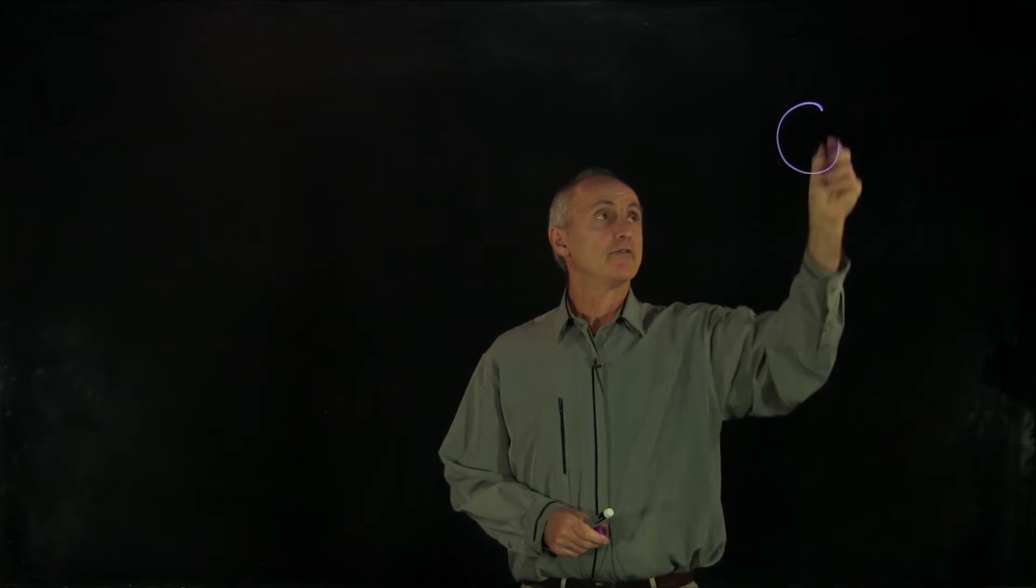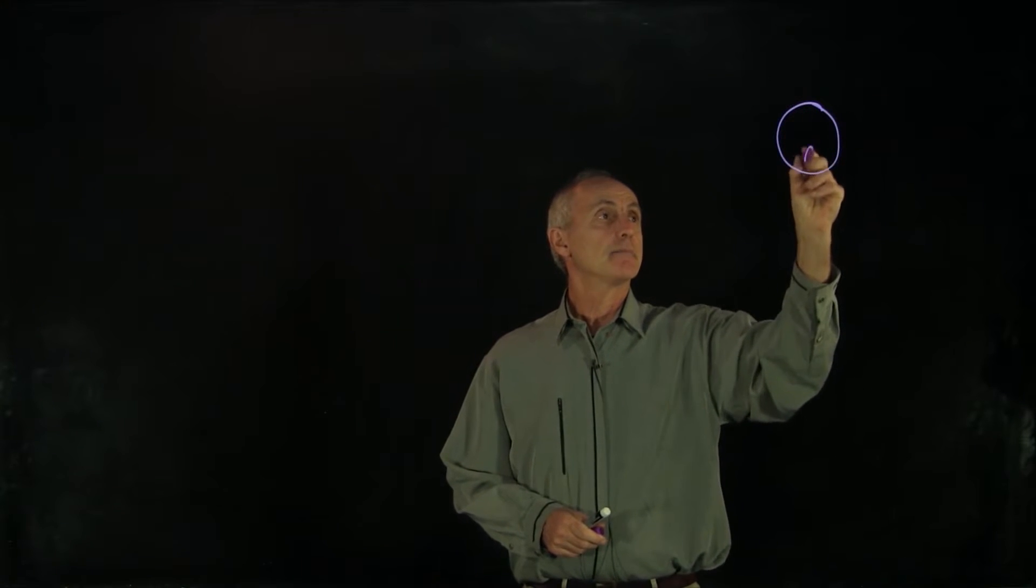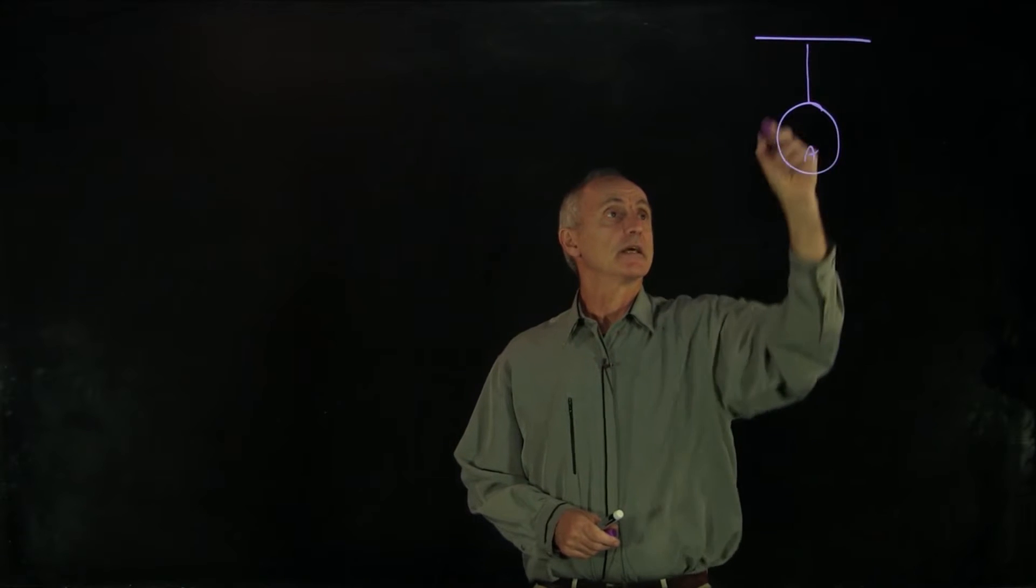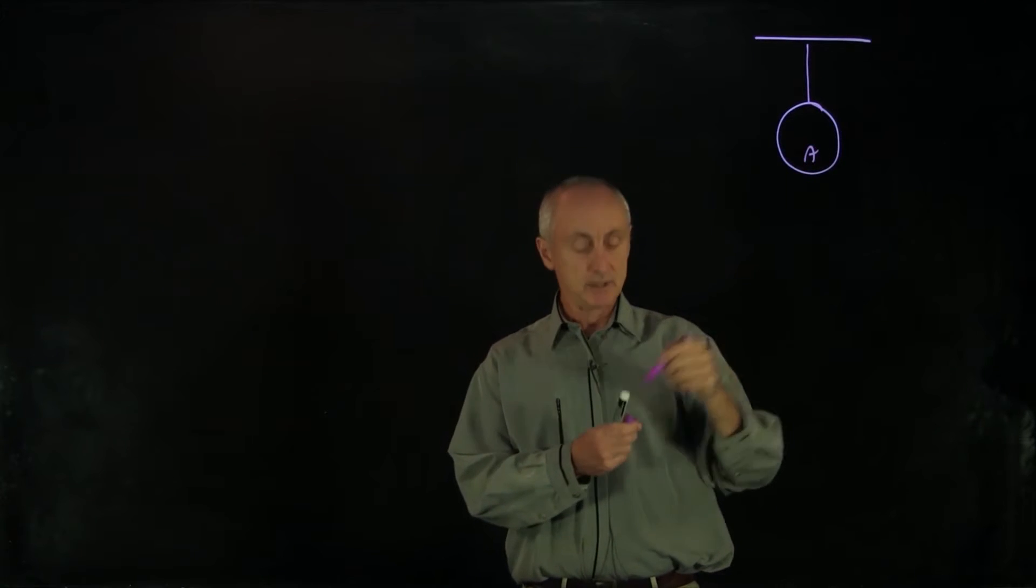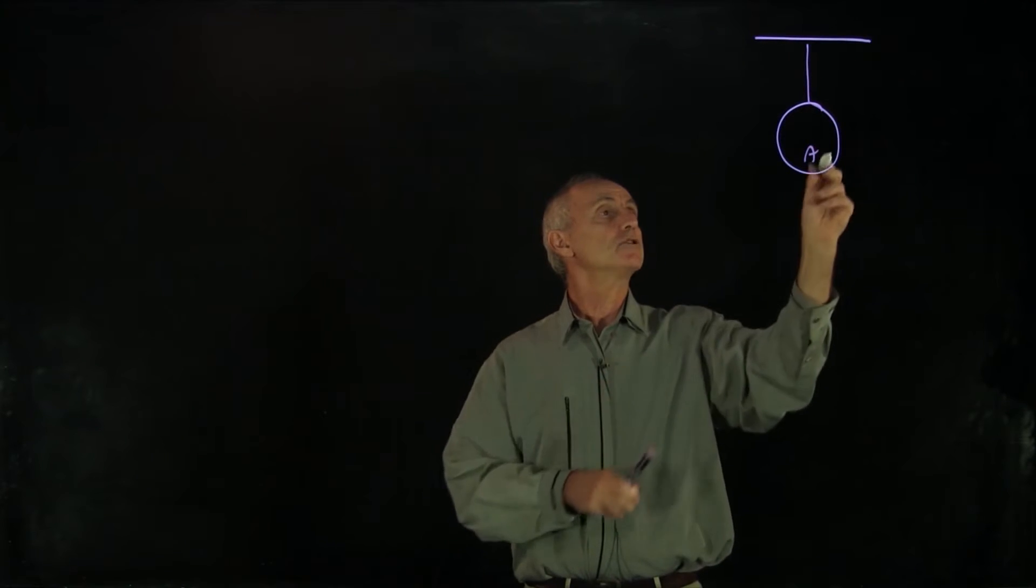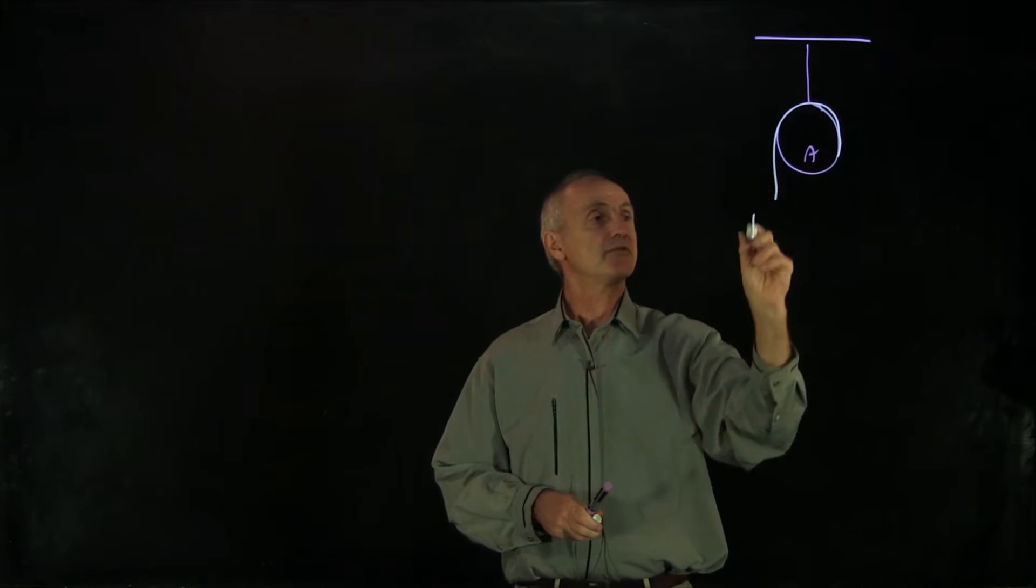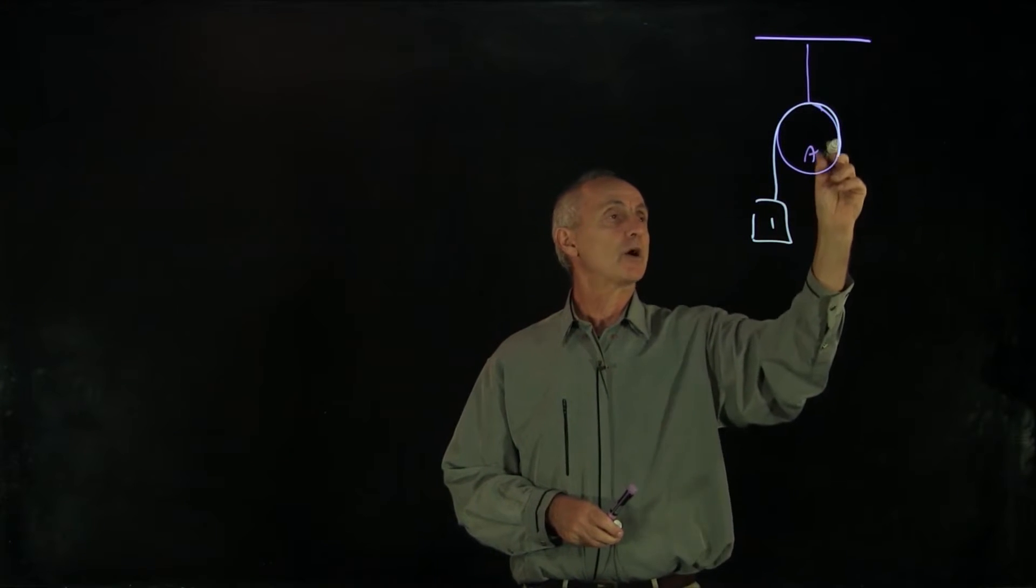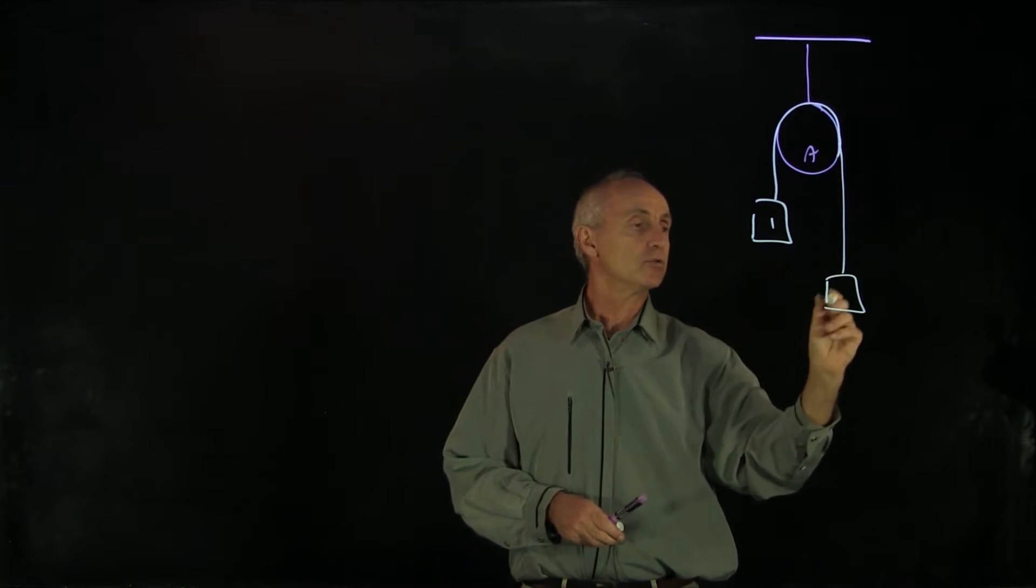Let's consider a very famous problem, the Atwood machine. We have a pulley suspended from a ceiling and a rope is wrapped around the pulley. On each side of the rope, there's different masses. So here's block one and block two.